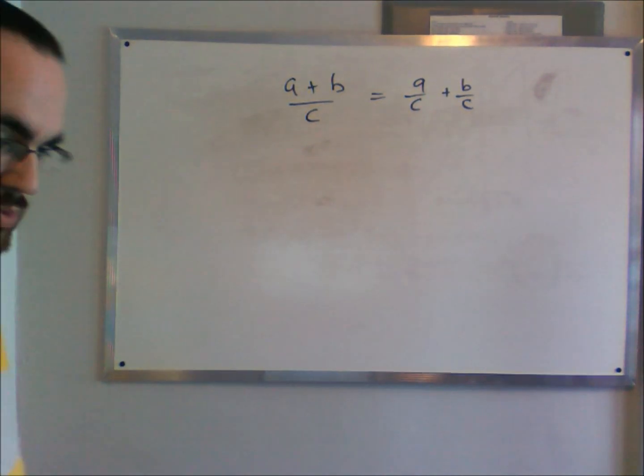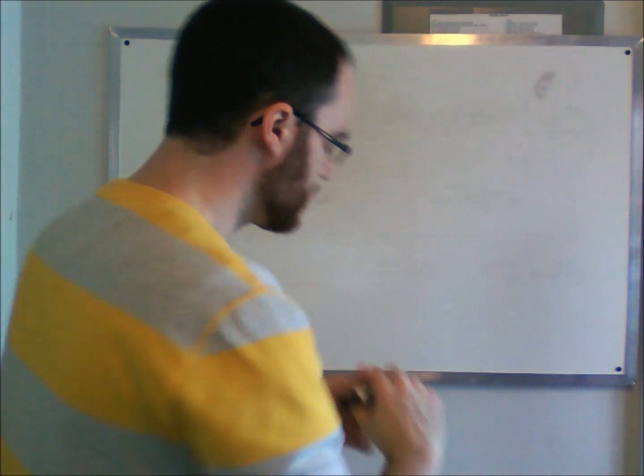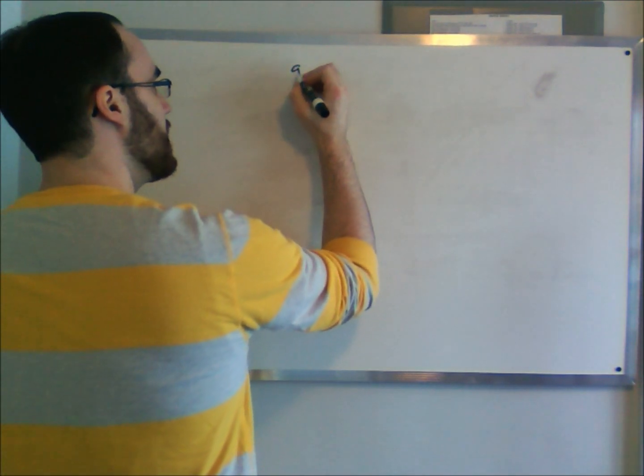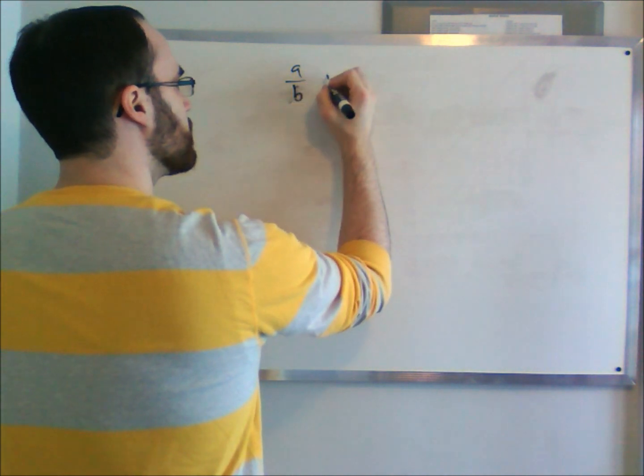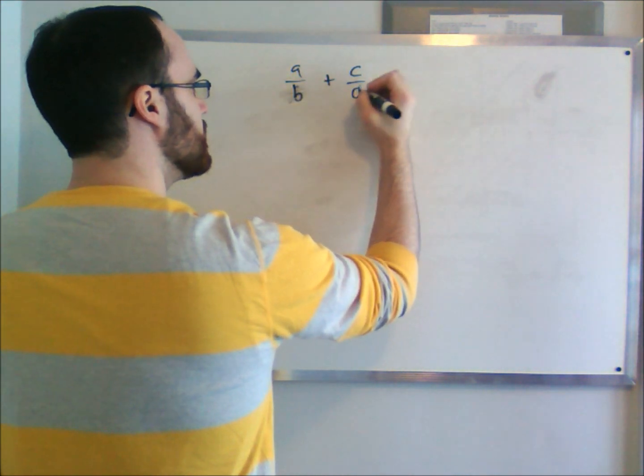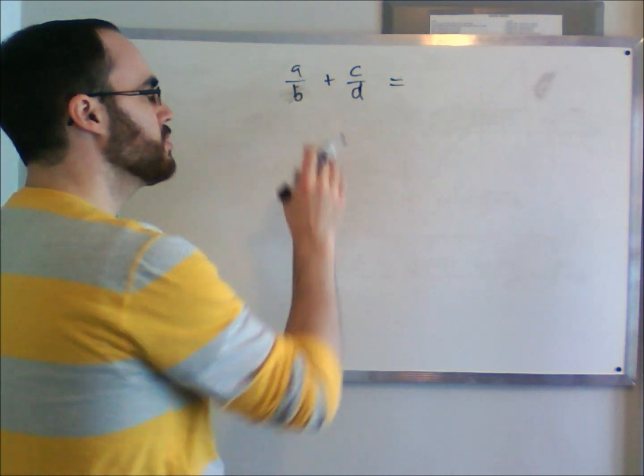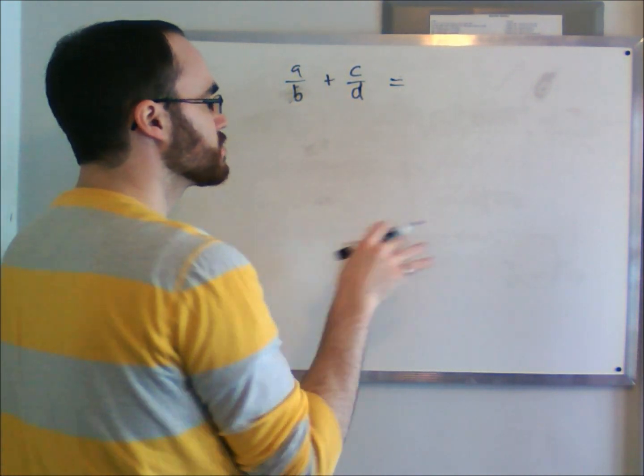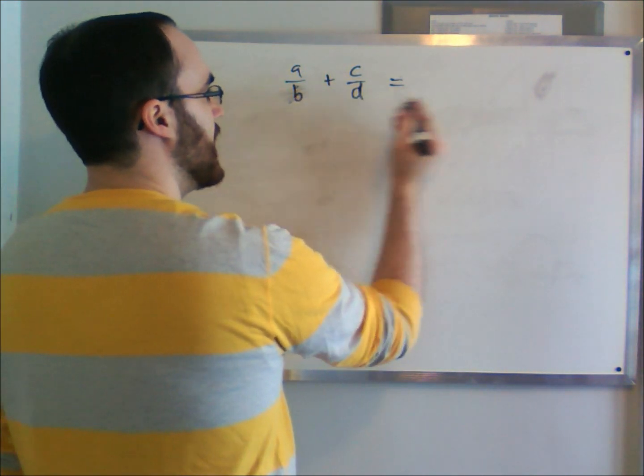Let's talk about fractions when they're being added in general. So if we have A over B plus C over D, and we want to find out what that's equal to, how do we put these two fractions together? It's through a common denominator. So the common denominator here is B times D.